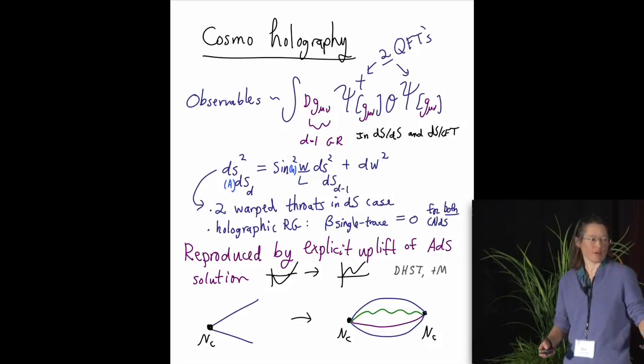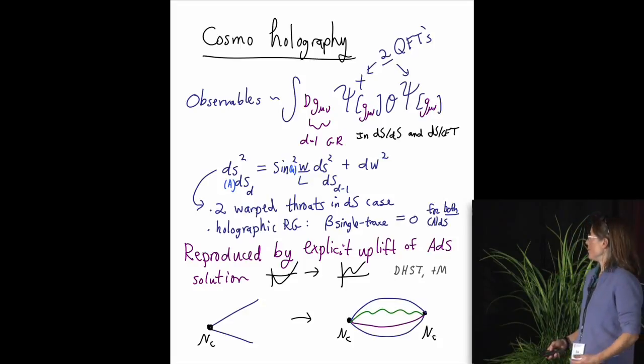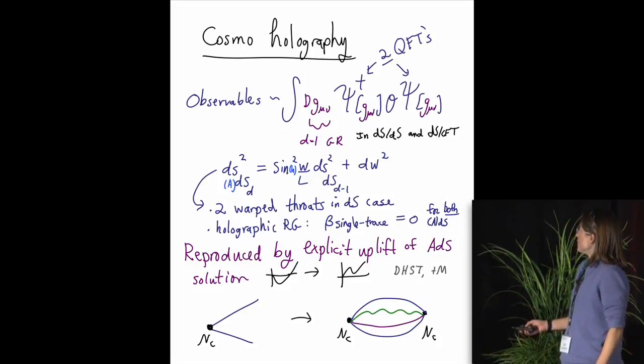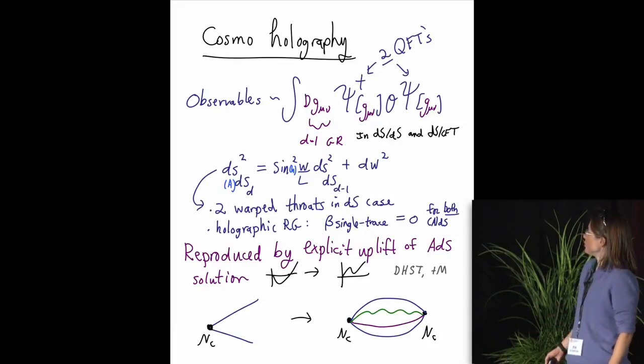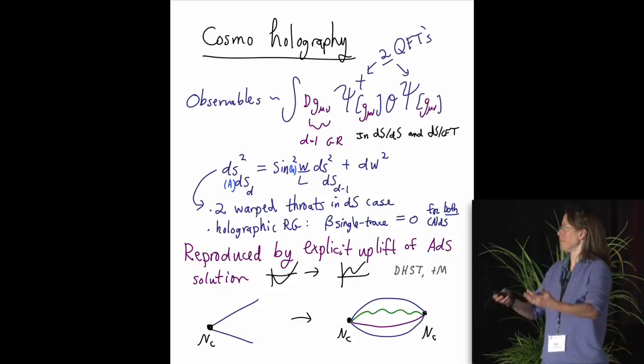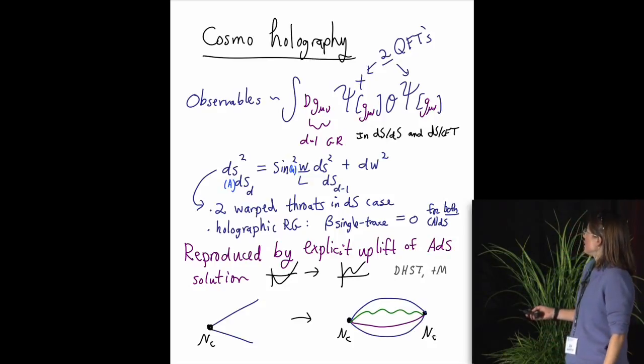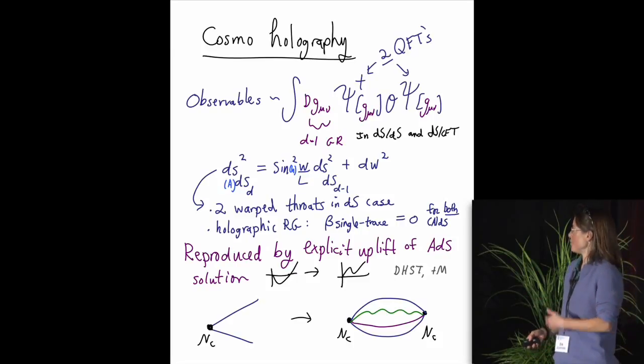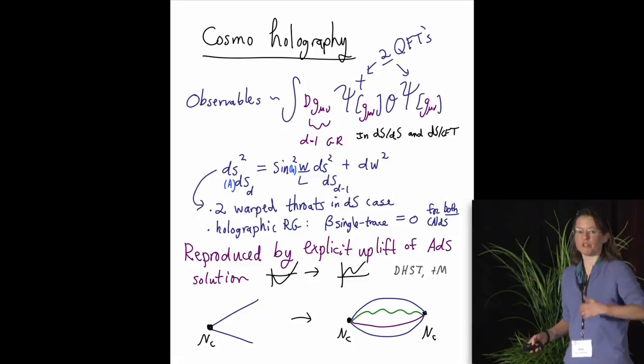More conceptually, there's a question of whether and how we can upgrade the famous ADS-CFT correspondence to give a framework for cosmology. And one intriguing thing is that in sort of both of the approaches to doing this in the case of the perhaps temporary desider expansion, one obtains the following structure in both cases for somewhat different reasons. One is led to a dual description in terms of a pair of quantum field theories that couple through gravity that continues to fluctuate, but in lower dimensions.